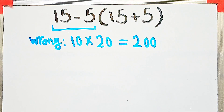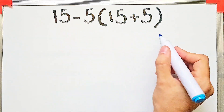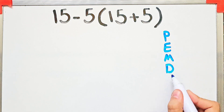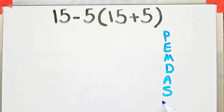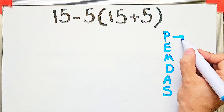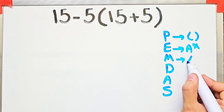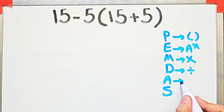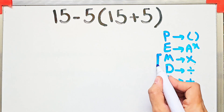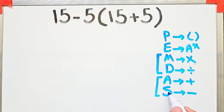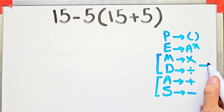Let's solve this question step by step together. To solve this, we need to follow the PEMDAS rule. PEMDAS shows the priority of mathematical operations — if you don't pay attention to this rule, you get the wrong answer. P stands for parentheses, E for exponent, M for multiplication, D for division, A for addition, and S for subtraction. Multiplication and division have the same level of priority, and addition and subtraction also have the same priority.